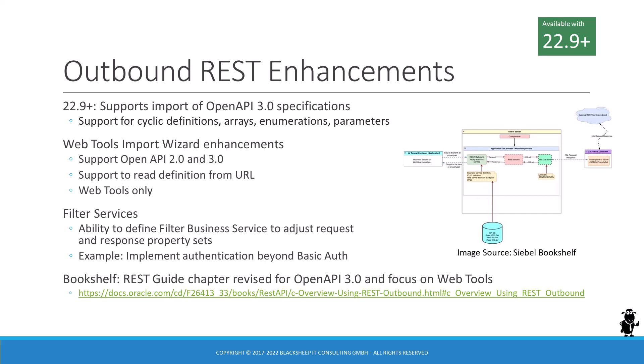The introduction of filter services for outbound REST gives developers the ability to intercept the outgoing request and incoming response to inspect or even modify the property sets as they fly by. This might prove quite valuable if, for example, the external service requires a stronger authentication than basic authentication. Make sure to check out the REST guide in Bookshelf 22.9 and later. The chapter on outbound REST has been revised and WebTools is now the go-to standard for importing external specifications to generate proxy business services and adjacent integration objects.